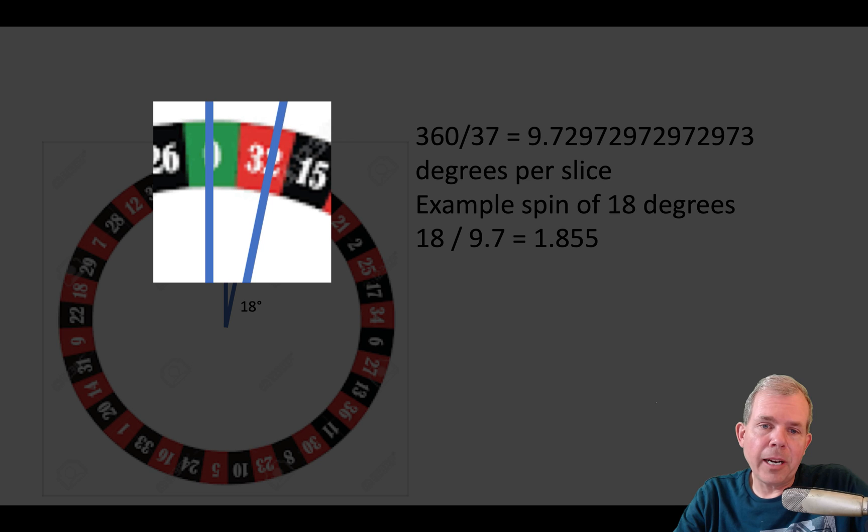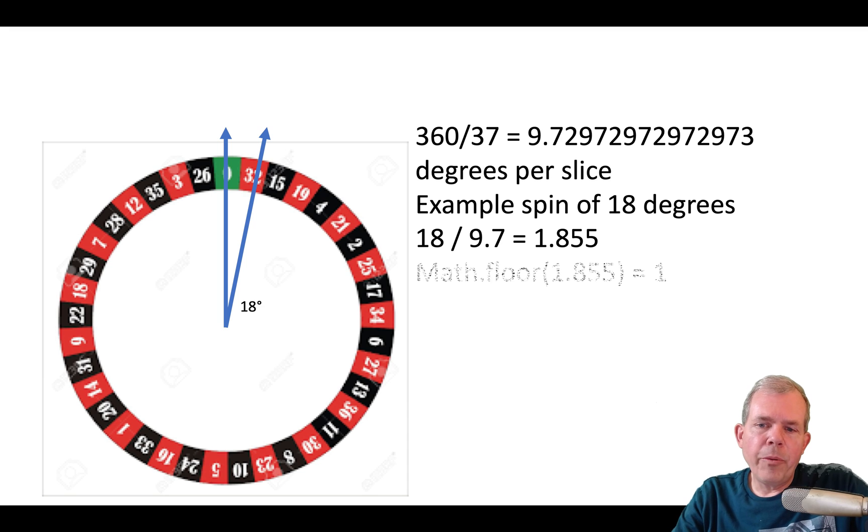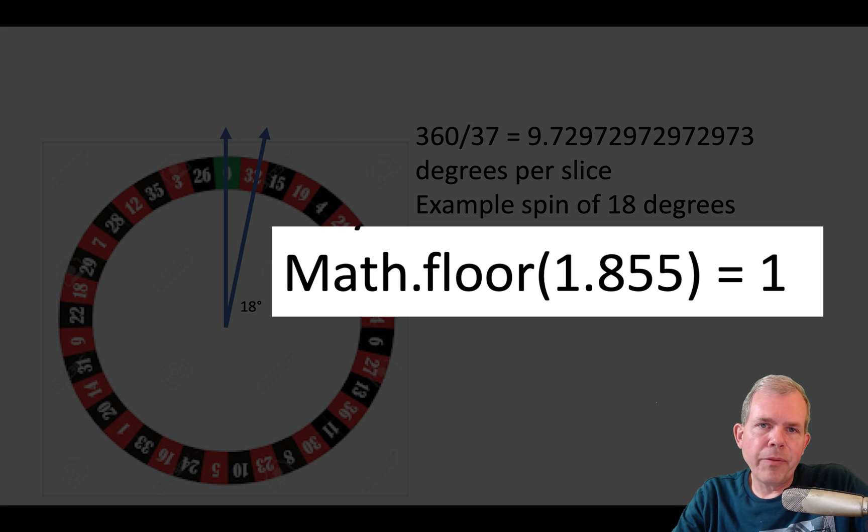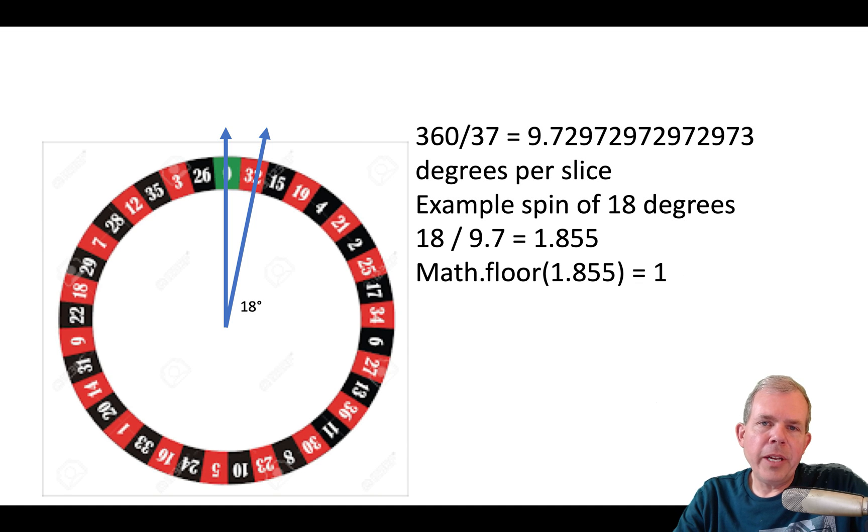Well, we can see that it stopped on the second square. But how do you calculate that with computer languages? Well, in Java, there is a floor command and probably most other languages you have a round down command or a floor command, something like that. So if we take the math library and floor 1.855, it rounds it down to 1. So we know that it stopped at slot number 1 or square number 1.